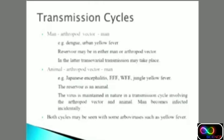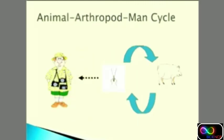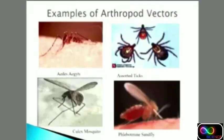Another important cycle is animal-arthropod-man, also known as a zoonotic disease, because arthropod vectors transmit the infection from the animal to the human being — for example, Japanese Encephalitis, where the reservoir is an animal. Both cycles may occur with some arboviruses like Yellow Fever, where the animal can also be a reservoir host, so transmission occurs either man-to-man or animal-to-man via the vector. In this cycle, man is the accidental host.